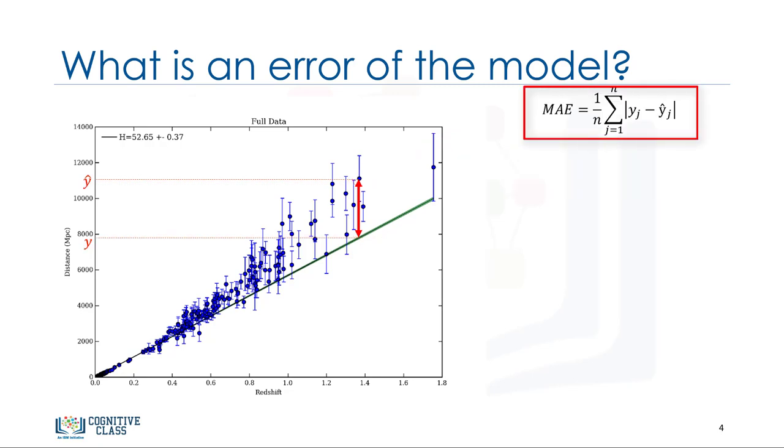Mean absolute error is the mean of the absolute value of the errors. This is the easiest of the metrics to understand since it's just the average error.